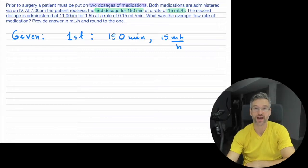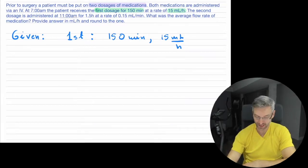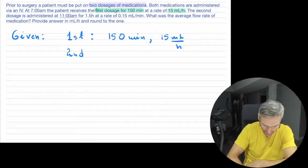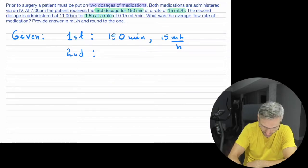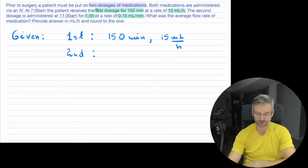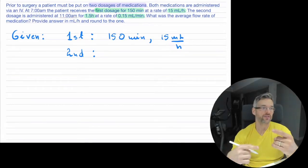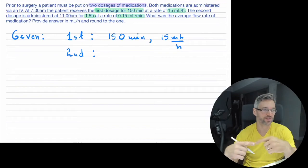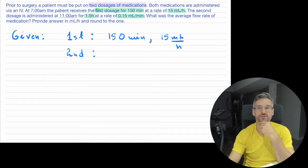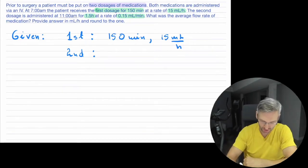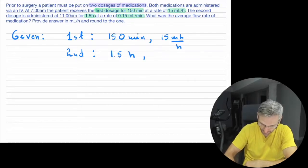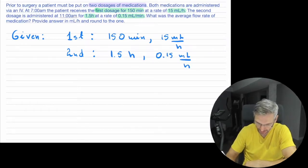The second dosage is administered at 11am, and that one is for one and a half hours. Notice the flow rate there is 0.15 milliliters per minute. So basically, the first dosage is 150 minutes at 15 milliliters every hour, and the second dosage is for one and a half hours at 0.15 milliliters per minute.